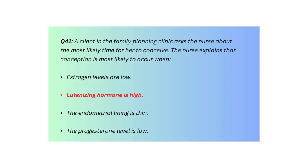Q41. A client in the family planning clinic asks the nurse about the most likely time for her to conceive. The nurse explains that conception is most likely to occur when: estrogen levels are low, luteinizing hormone is high, the endometrial lining is thin, or the progesterone level is low.